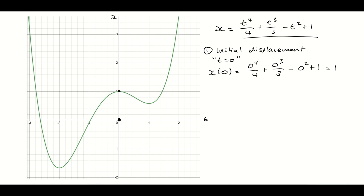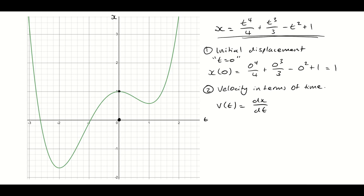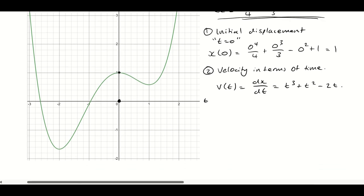Another common question is to find the velocity in terms of time. The velocity function v(t) is the derivative of x with respect to time — the change in displacement with respect to time. So we differentiate the displacement function and get: v = t cubed plus t squared minus 2t. That is the velocity in terms of time.